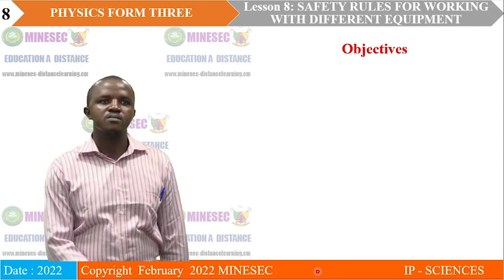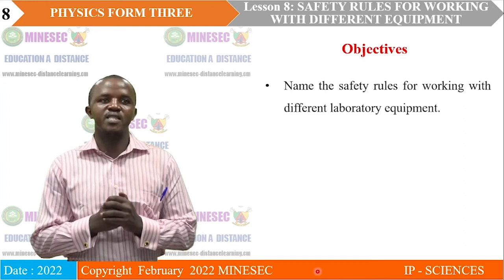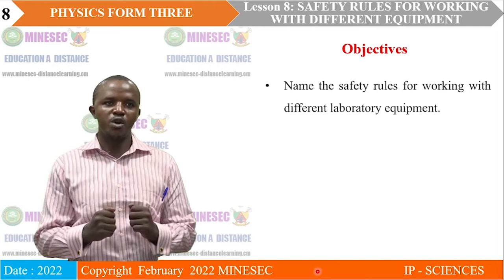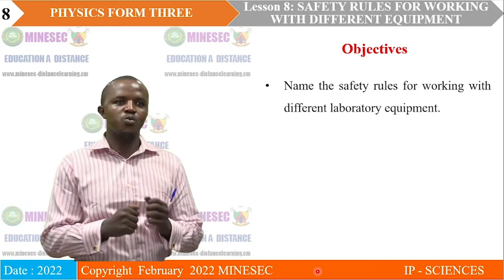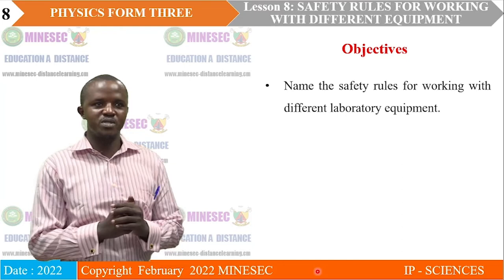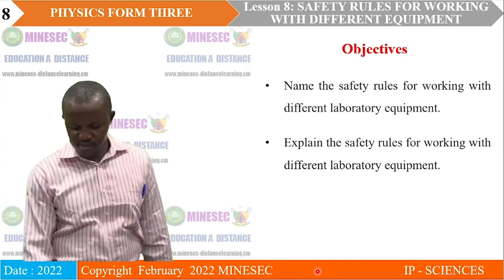What are our objectives for this lesson? I expect that by the end of this lesson, the learner should be able to name the safety rules for working with different laboratory equipment — meaning that if you are given equipment to work with in the laboratory, you should know the safety rules involved, so that you stay safe and the equipment is also preserved. We are also expected to be able to explain the different safety rules for working with different laboratory equipment.